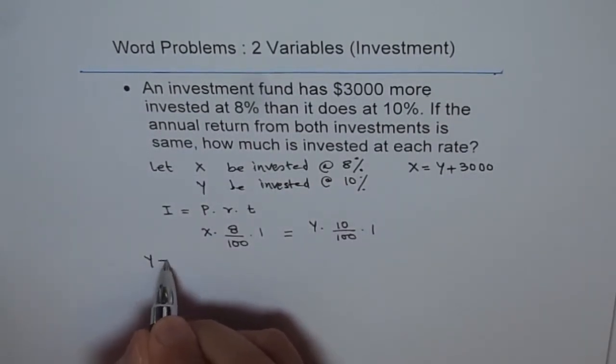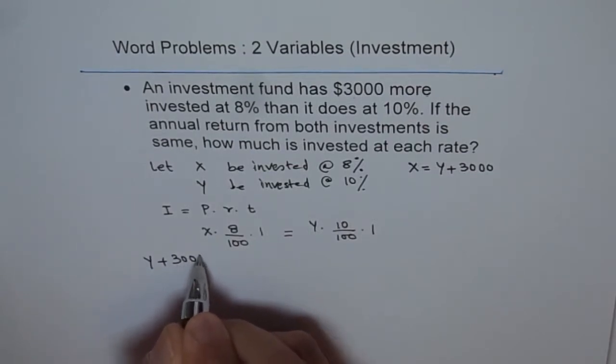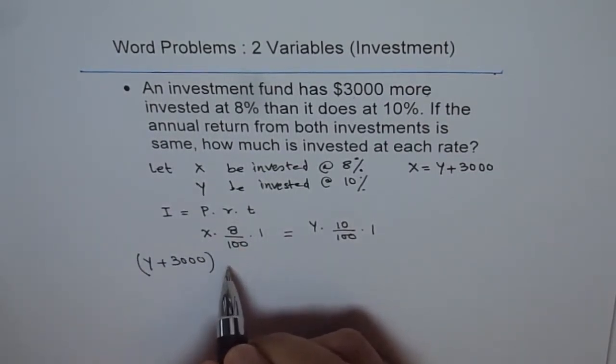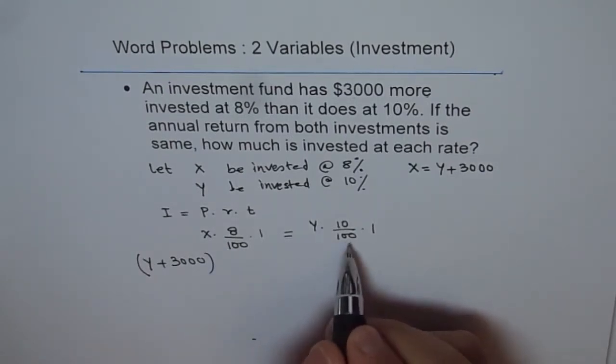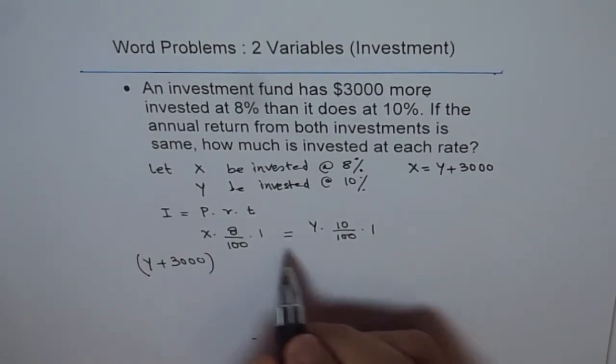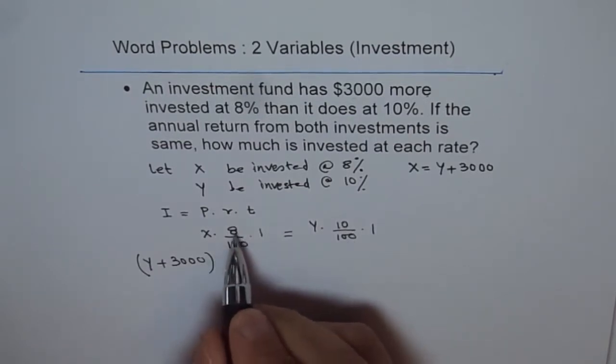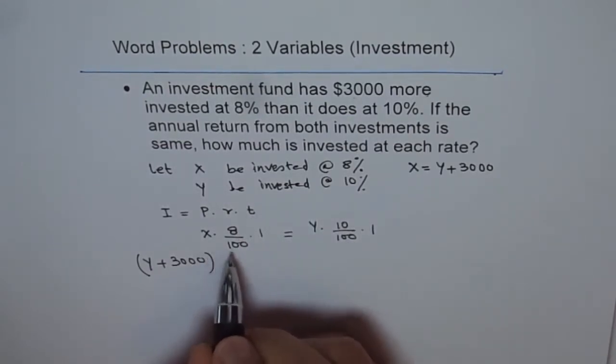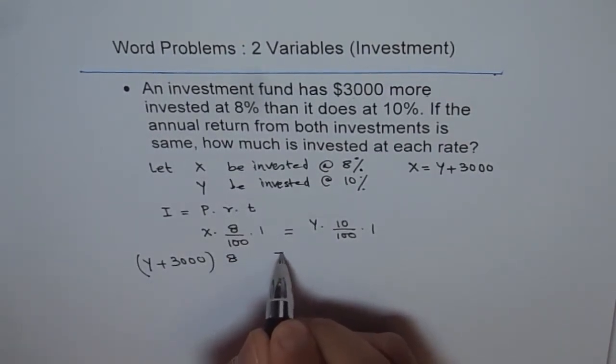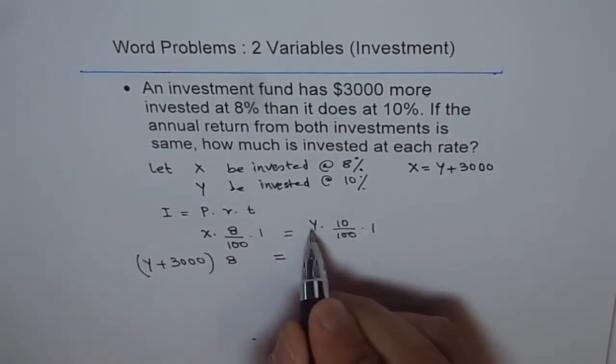So I get Y plus 3000 times 8 over 100. We can cancel these numbers over 100, so we're not working in decimals anymore. We'll just write times 8. So we cancelled 100 from both sides. We get times 8 equals 10 times Y.